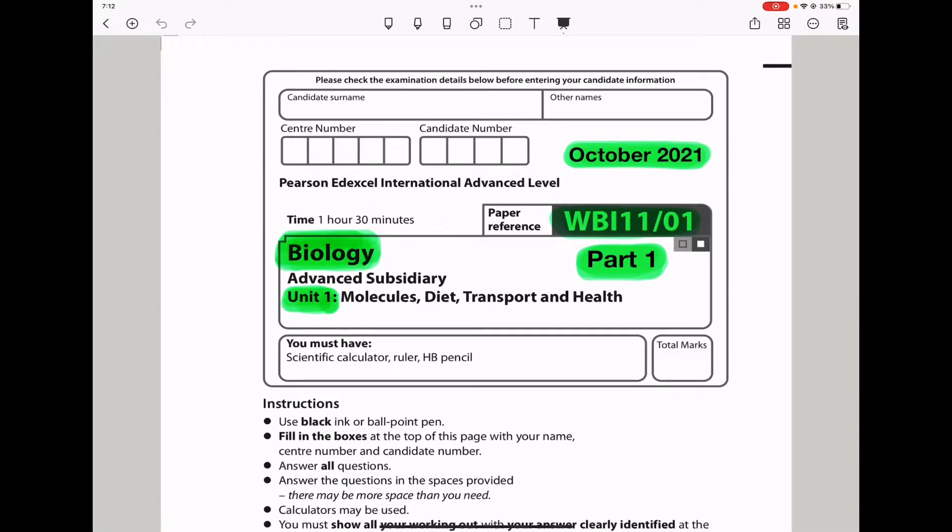Welcome to the Chemistry, Biology, and Math Revision Hub. Today we are doing the Pearson Edexcel International A-Level Biology Unit 1 for October 2021. This is the part 1 video. I'll put the link to the part 2 video below the description box.